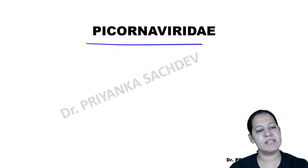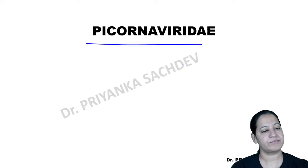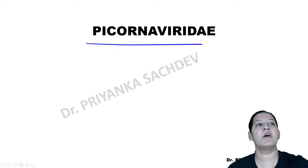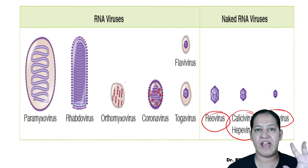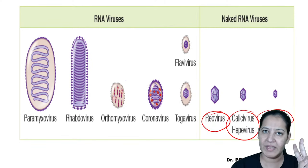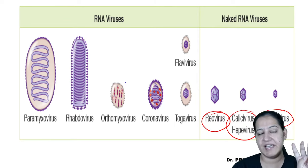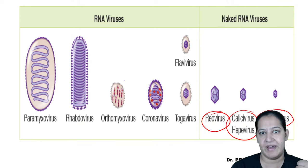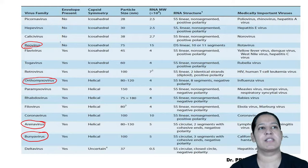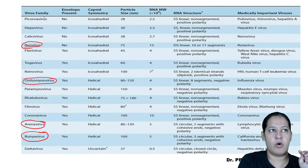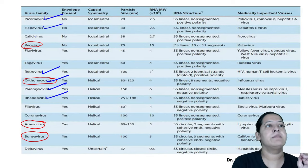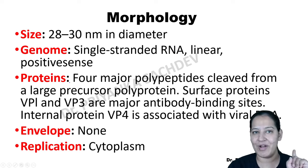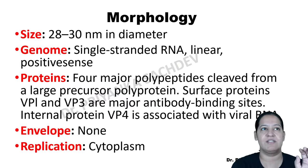I'll teach only the important RNA viruses. The most important ones are Picornavirus, Orthomyxovirus, Paramyxovirus, Rhabdovirus (Rabies), and Retrovirus (HIV). Starting with Picornaviridae — we will study this family first.